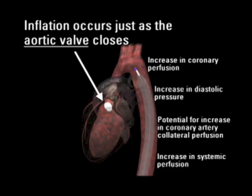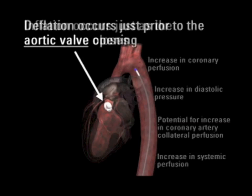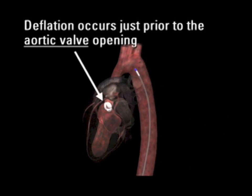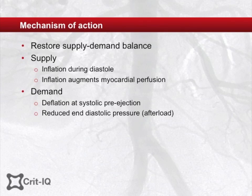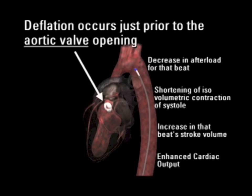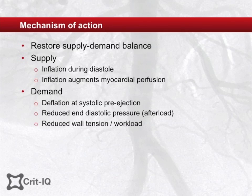The balloon remains inflated during diastole. Correctly timed deflation occurs at systolic pre-ejection, reducing aortic end diastolic pressure, aortic resistance, and hence afterload, making it easier for the heart to empty. The reduction in aortic end diastolic pressure, in turn, reduces left ventricular wall tension, and thus left ventricular workload, and this reduces the metabolic demand placed on the heart.